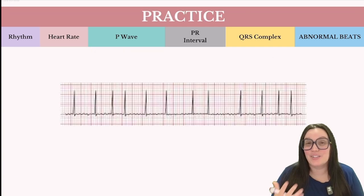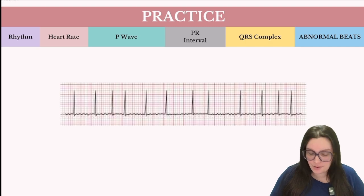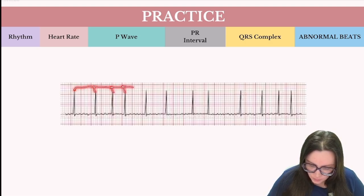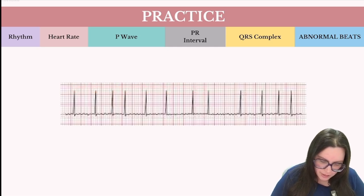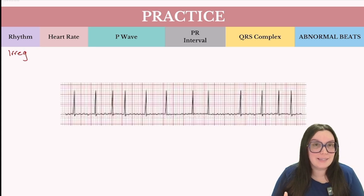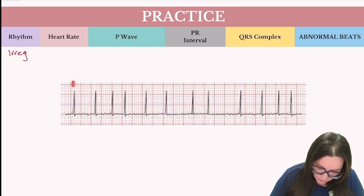Let's do some practice. We begin by identifying our rhythm — is it regular or irregular? If I measure out my R-to-R complexes, you're going to see that they don't fall in the same place every single time; some are longer, some are shorter. So we can identify this as an irregular rhythm. Because it's irregular, we're just going to count our QRS complexes: 1, 2, 3, 4, 5, 6, 7, 8, 9, 10, 11, 12.